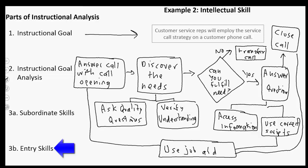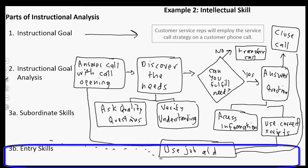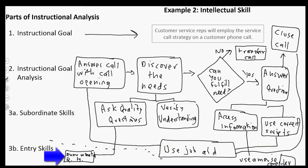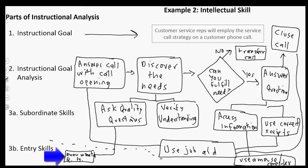So our last thing is entry skills. And let's just do one here. So asking quality questions. Maybe they need to be able to determine what is a question. And that's way down there on the entry skills. But if you don't know what a question is, you can't really ask quality questions. So accessing information on the database over here on the right. Well, an entry skill for that would be able to use a mouse and computer. So you can see how these entry skills are things we assume they already know, but things that they would need to be able to do to learn the subordinate skills.